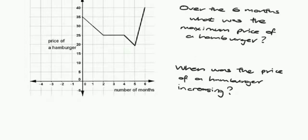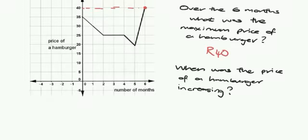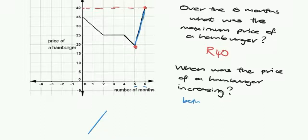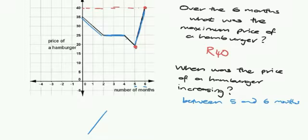What was the maximum price of the hamburger? We're looking for the highest price — where the graph reaches its highest point. It's over here, and reading off that highest point it is 40 Rand. We could similarly look for the minimum — the lowest point on the graph. They also asked when was the price increasing — we're looking for when the graph is going up, and that's clearly in this region here. Reading that off, that's between five and six months after we started looking at the price. Over here it's staying constant, and here it's decreasing and decreasing.